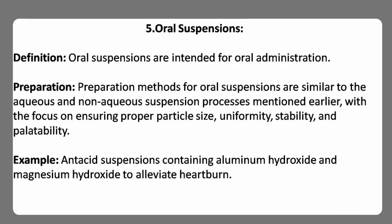Fifth, oral suspensions — intended for oral administration. Preparation methods are similar to the aqueous and non-aqueous suspension processes, with focus on ensuring proper particle size, uniformity, stability, and palatability. Example: antacid suspensions containing aluminum hydroxide and magnesium hydroxide to alleviate heartburn.